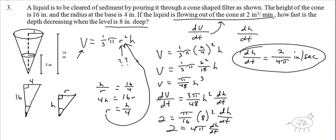A little complicated, but notice all the steps. You've got to take that derivative correctly. You're looking for change rate — change in area, change in volume, whatever — that's your d/dt. That's d-by-whatever over dt.